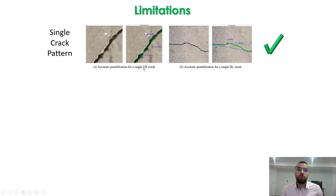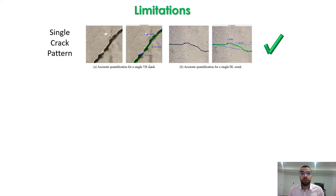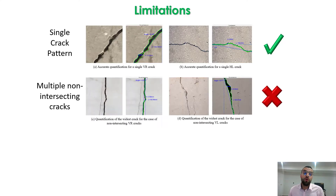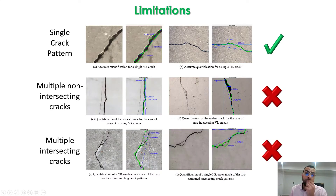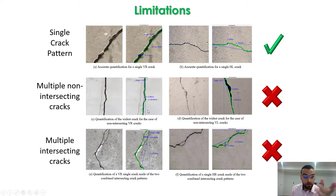Our algorithm had amazing performance when dealing with single cracks per image. However, limitations arise with multiple cracks. When having multiple non-intersecting cracks, the algorithm performs all procedures based on the thicker crack. For multiple intersecting cracks, the algorithm considers the entire intersecting area as damaged. These are the current limitations of our study.